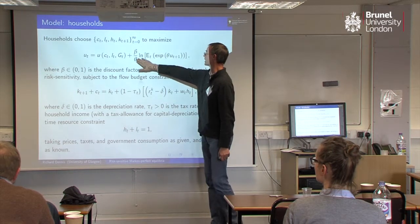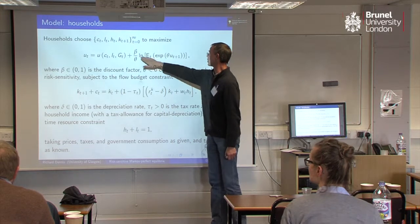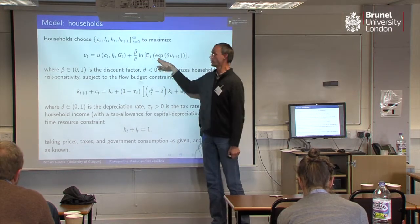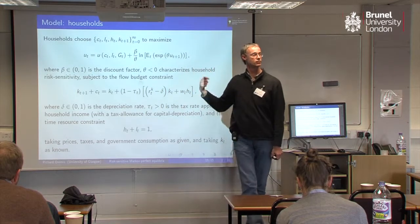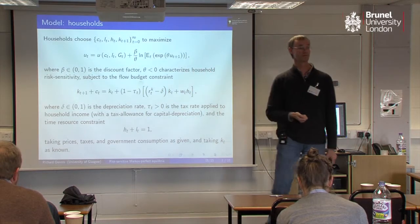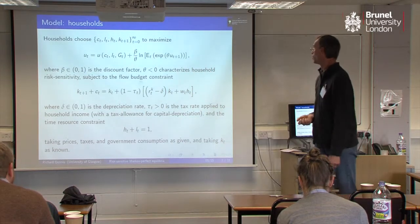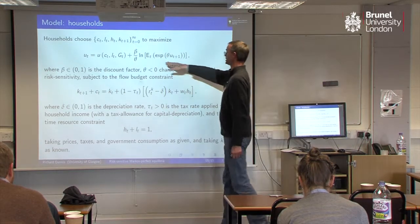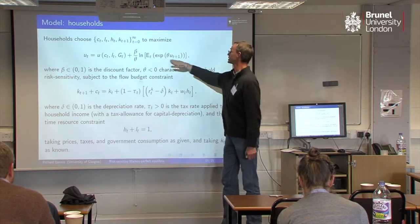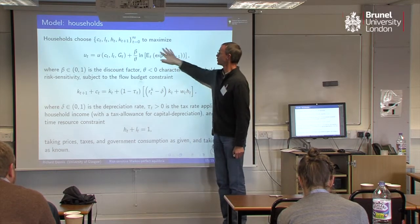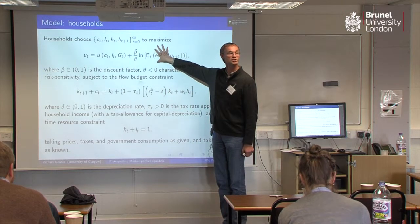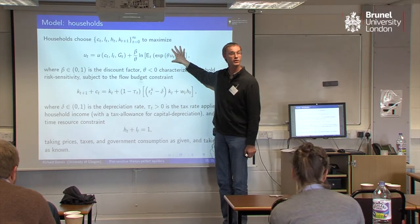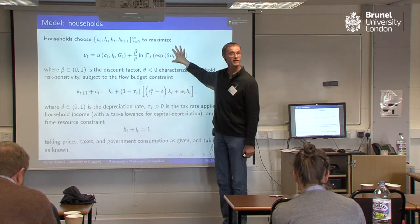If the theta wasn't there — and the log and the exponential weren't there — then this would be just a standard recursive problem. Because the expectation is linear in the probabilities, it's like you're risk neutral with respect to your continuation value. So if you didn't have the risk sensitivity there, the household might have some curvature — so they're risk averse in terms of their current consumption or their leisure — but they're risk neutral in terms of their continuation value.